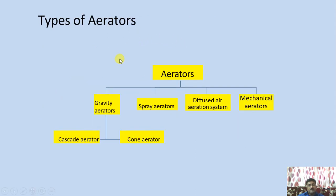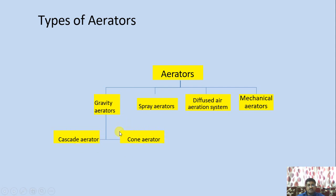The types of aerators are: gravity aerators, spray aerators, diffused air aeration system, and mechanical aerators. Gravity aerators include cascade aerators and cone aerators. In cascade aerators, water flows over various staves; in cone aerators, a cone-type structure is used.